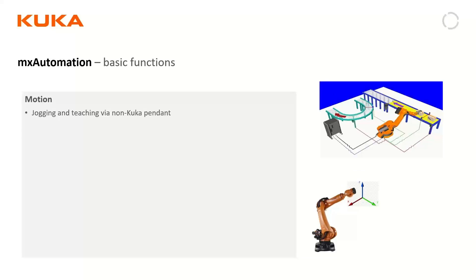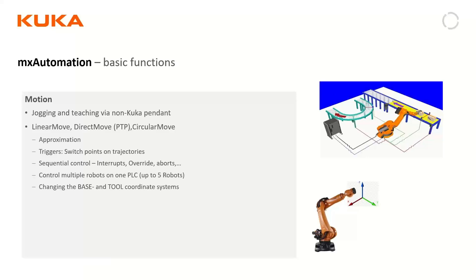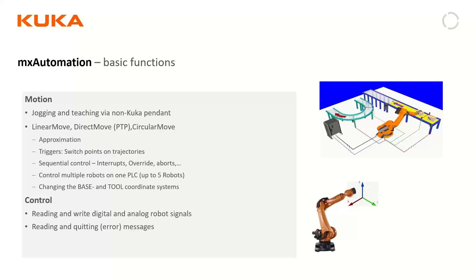Some of the basic functions available through MX Automation: jogging and teaching through a non-Kuka pendant is possible — you still have the option to use a Kuka pendant. Standard motion types are all supported: linear moves, joint moves, circular moves, approximation or blending. Standard triggers and any kind of logic you'd have in a regular robot program are also available through the MX Automation interface. Each PLC can control up to five robots. Changing base and tool coordinates is also possible, and you can read and write digital and analog I/O in the robot system. You also have the ability to read and acknowledge messages — so you can do everything remotely without the Kuka pendant.